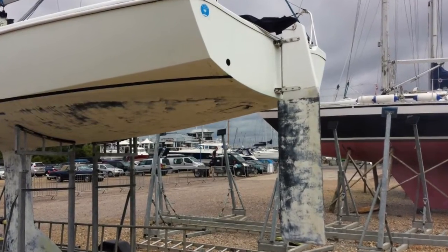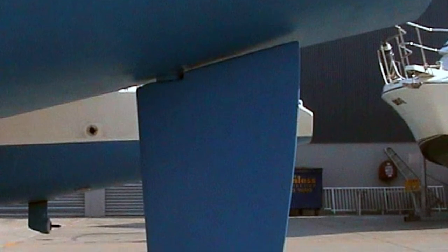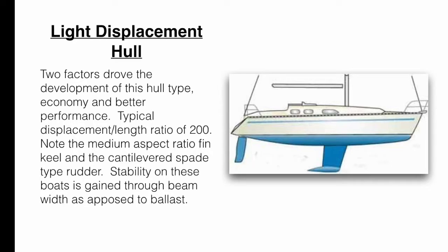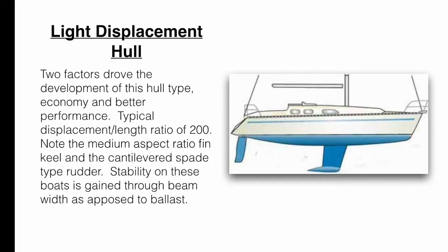The rudder will be either transom hung or be supported by a short skeg, or it can be cantilevered, a cantilevered spade type rudder as you see on this particular picture. The underwater shape of these ultralights and light displacement hulls are going to be more and more dinghy-like. There will be minimum overhangs at both the bow and the stern, which is done in an effort to increase waterline length.